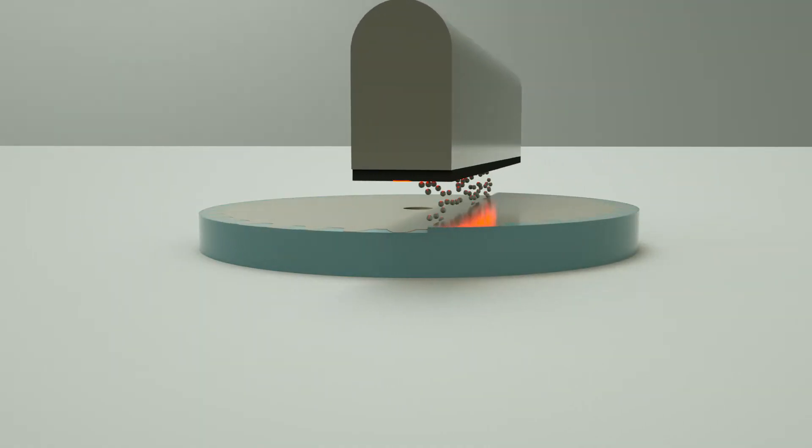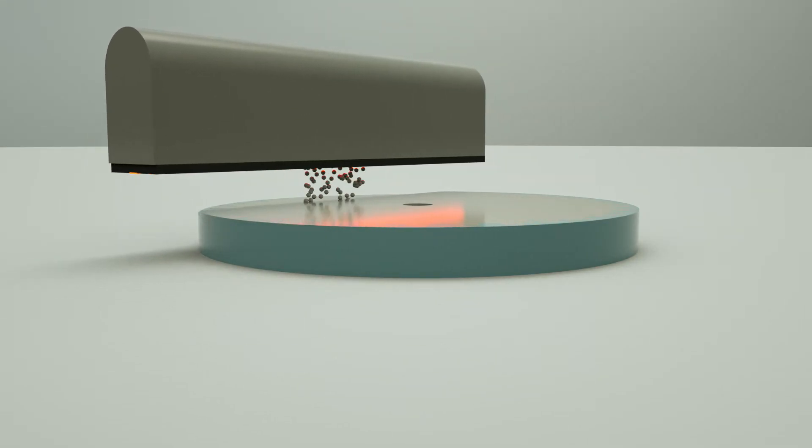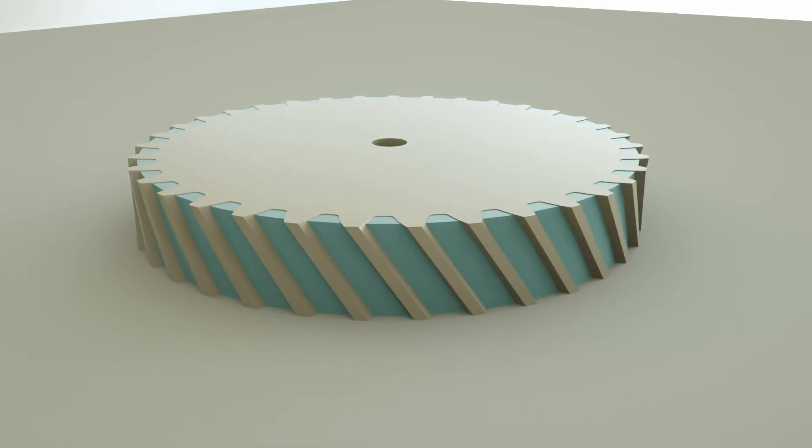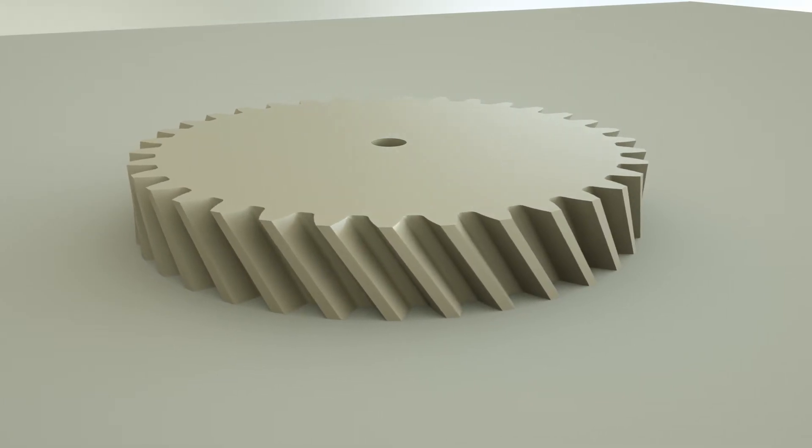The ceramic part builds up as the tray descends with each pass of the inkjet printheads. After printing, the support component, made of a soluble material, is easily disintegrated, allowing for fast and clean support removal.